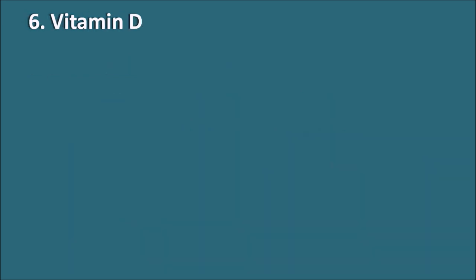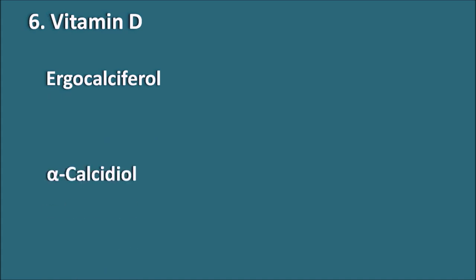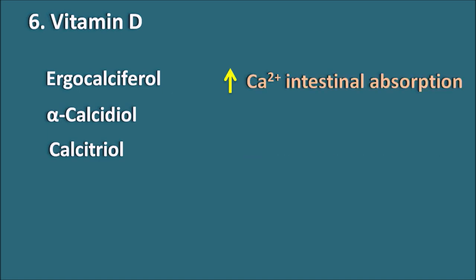The sixth drug category is vitamin D. Preparations include ergocalciferol, alpha-calcidiol, and calcitriol. Vitamin D is mainly responsible for increased intestinal calcium absorption and decreased calcium excretion. This is why vitamin D is important for bone growth and bone formation, and it thereby helps decrease osteoporosis.